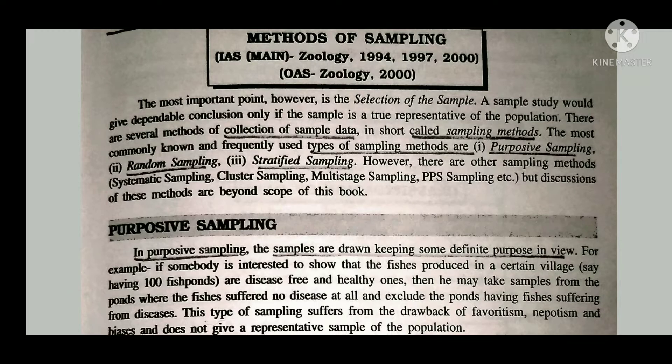There are other sampling methods as well, such as systematic sampling, cluster sampling, multi-stage sampling, and DPS sampling. Now let's look at purposive sampling. In purposive sampling, samples are drawn keeping some definite purpose in view.